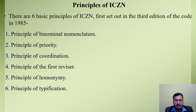Now we will discuss the core principles of ICZN. There are six basic principles which were first set out in the third edition of the code in 1985. These six principles are: the Principle of Binominal Nomenclature, Principle of Priority, Principle of Coordination, Principle of the First Reviser, Principle of Homonymy, and the Principle of Typification. We will discuss these six principles in detail in upcoming slides.